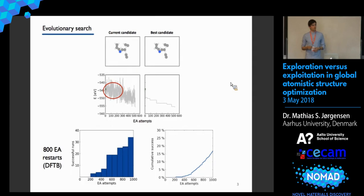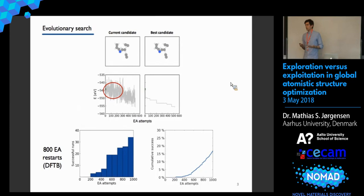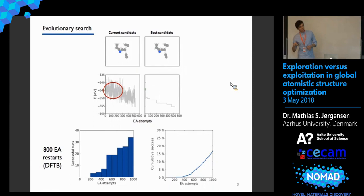This particular search found the global minimum after around 500 attempts, giving one data point in a plot showing the number of successful runs as a function of required attempts. If we restart the search 800 times and count all successful runs, we can visualize this as a cumulative success plot. In this case, about 15% of our 800 restarts found the global minimum after 1,000 attempts. Basically, we want this curve to lie as high as possible for high-performance search.